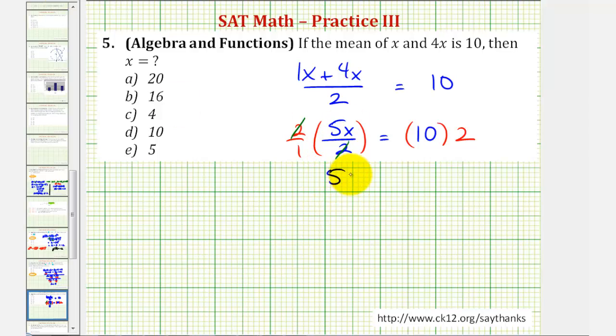So now we have 5x equals 10 times 2, which is 20. And now we divide both sides by 5. So we have x equals 20 divided by 5, which is equal to 4.